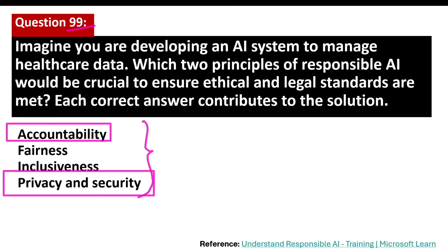The accountability principle states that AI systems are designed to meet any ethical and legal standards that are applicable. The system must be designed to ensure that privacy of the healthcare data is of the highest importance, including anonymizing the data where applicable. The fairness principle ensures that users of the system are treated fairly, and the inclusiveness principle states that AI systems must empower people in a positive and engaging way.